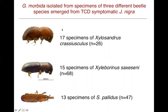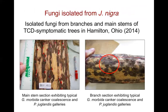We found Geosmithia morbida on 17 specimens of Xylosandrus crassiusculus, 15 specimens of Xyloborhinus saxinii, and 13 specimens of Stenomimus pallidus. This changes our thinking about TCD — perhaps other beetles, including these Xylosandrus and Xyloborhinus beetles, are capable of vectoring the pathogen. Those beetle populations are generally much higher than those of Stenomimus pallidus, so there is reason for some concern.